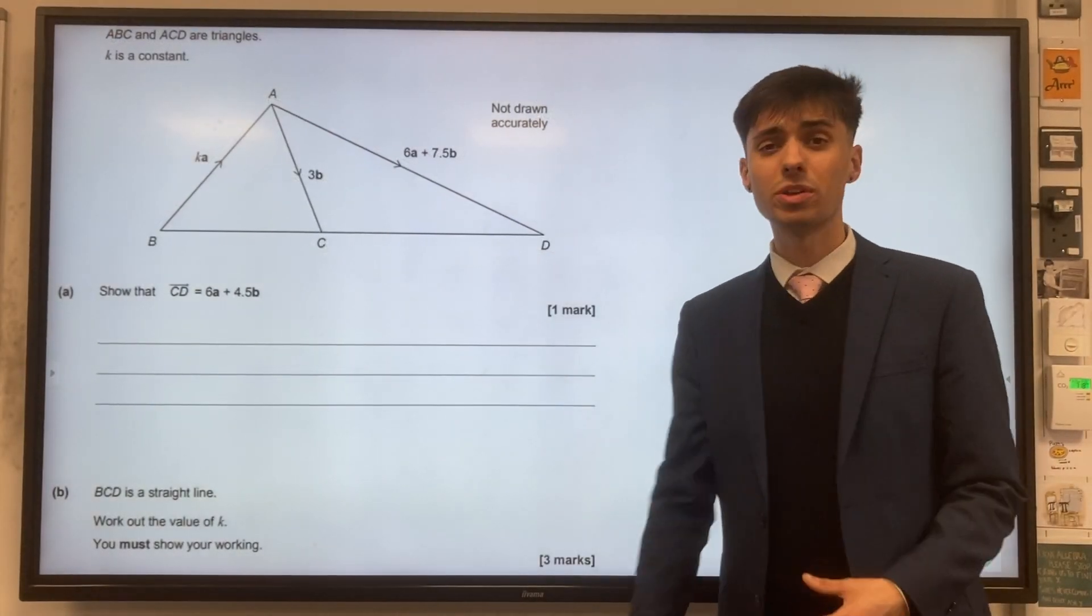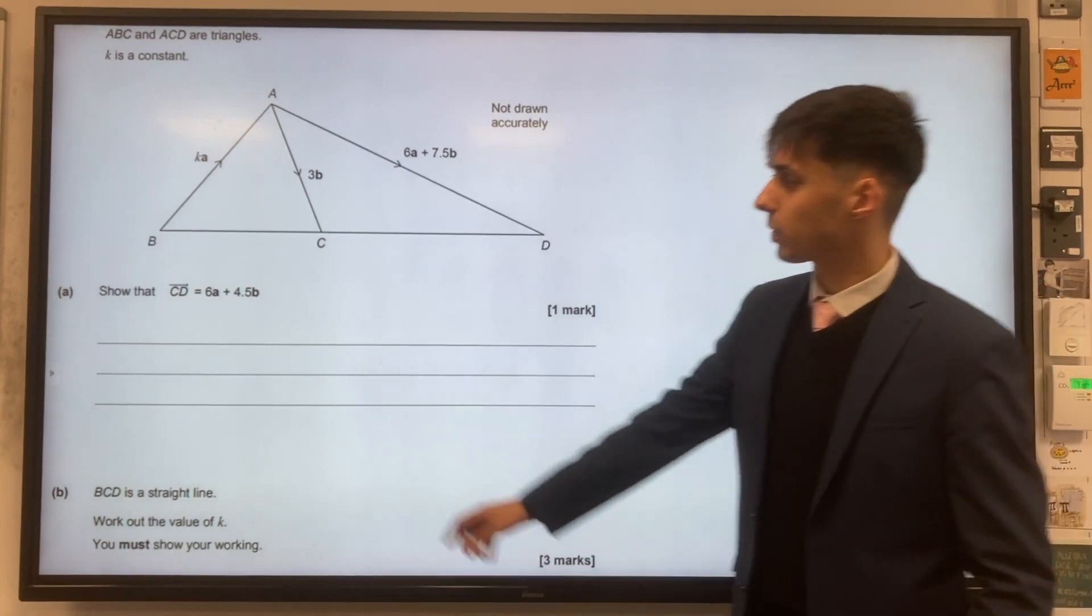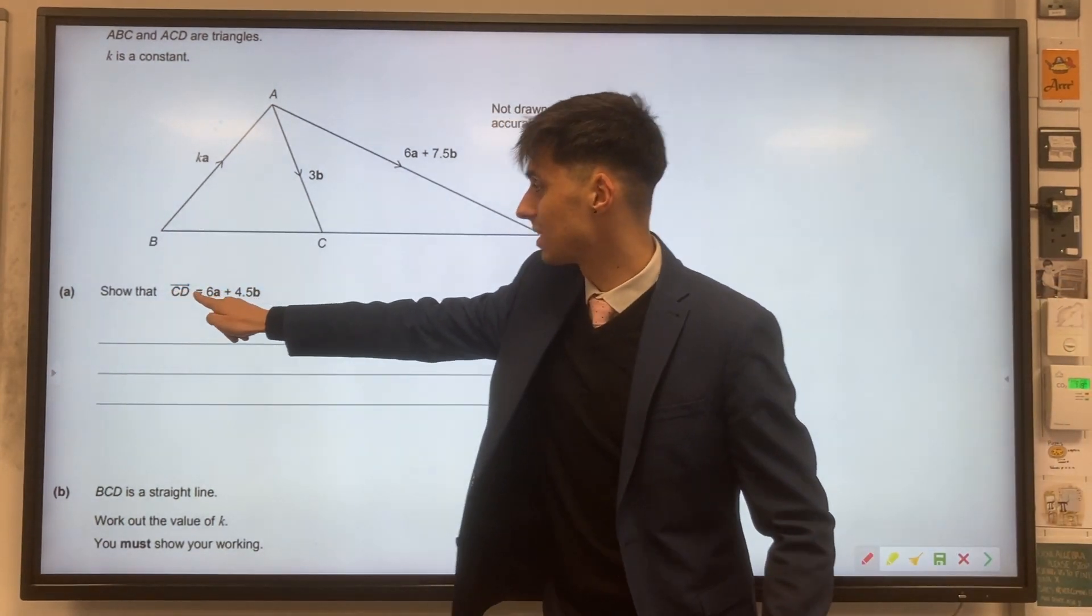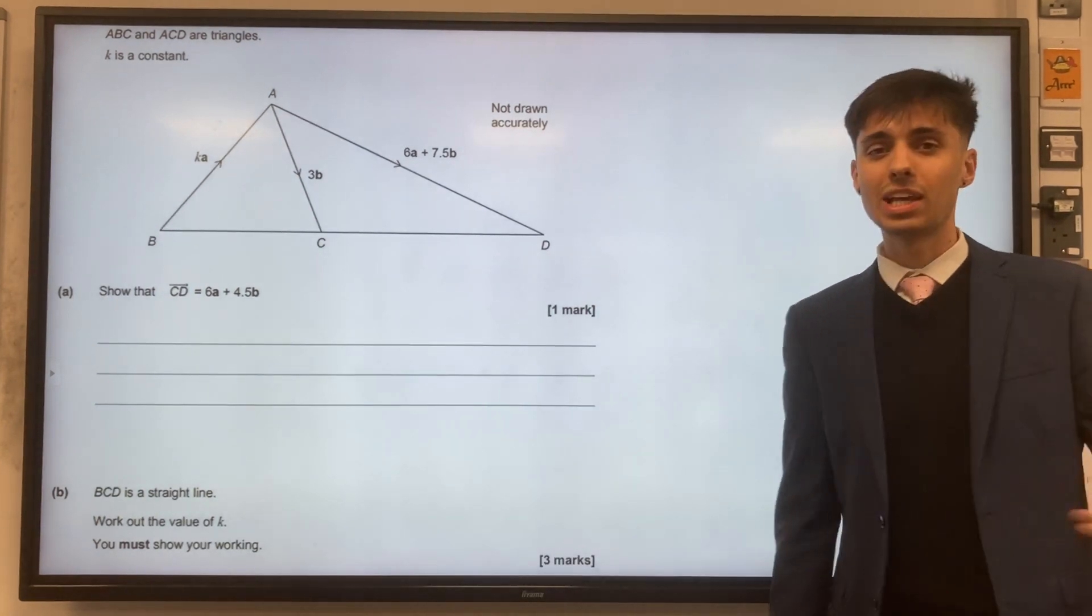In this question, we've got quite a common type of GCSE vector proof. Starting off, we'd like to show the vector CD is equal to 6A plus 4.5B. Let's look at how we get there.